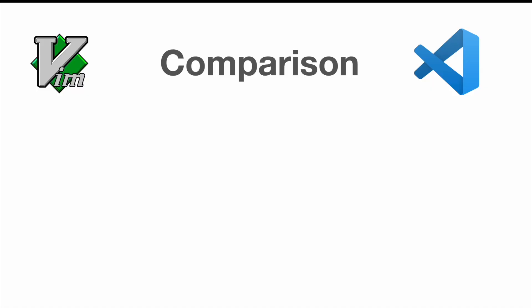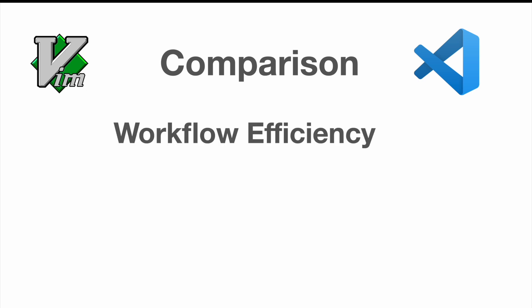Now that we have explored the key benefits of Vim and Visual Studio Code, let's compare them side-by-side to see which one is a better choice for you. Let's first have a look at workflow efficiency. While Vim excels in speed and keyboard navigation, VS Code's modern interface provides a more approachable and visual coding experience.